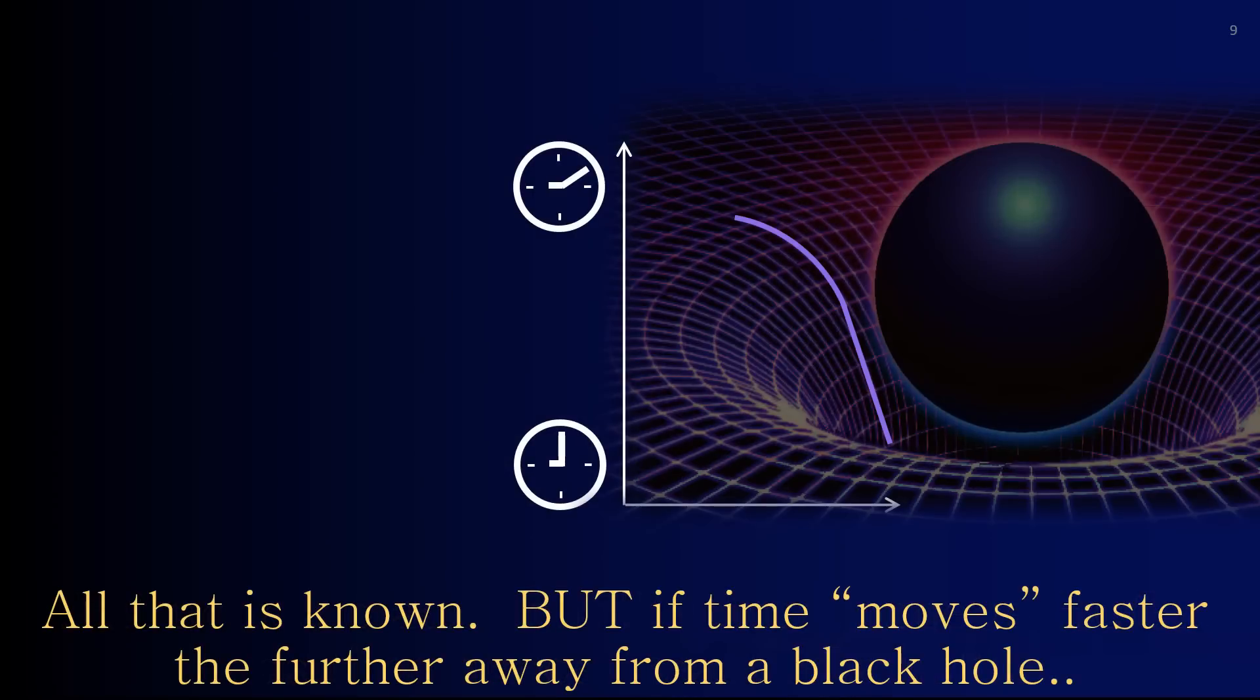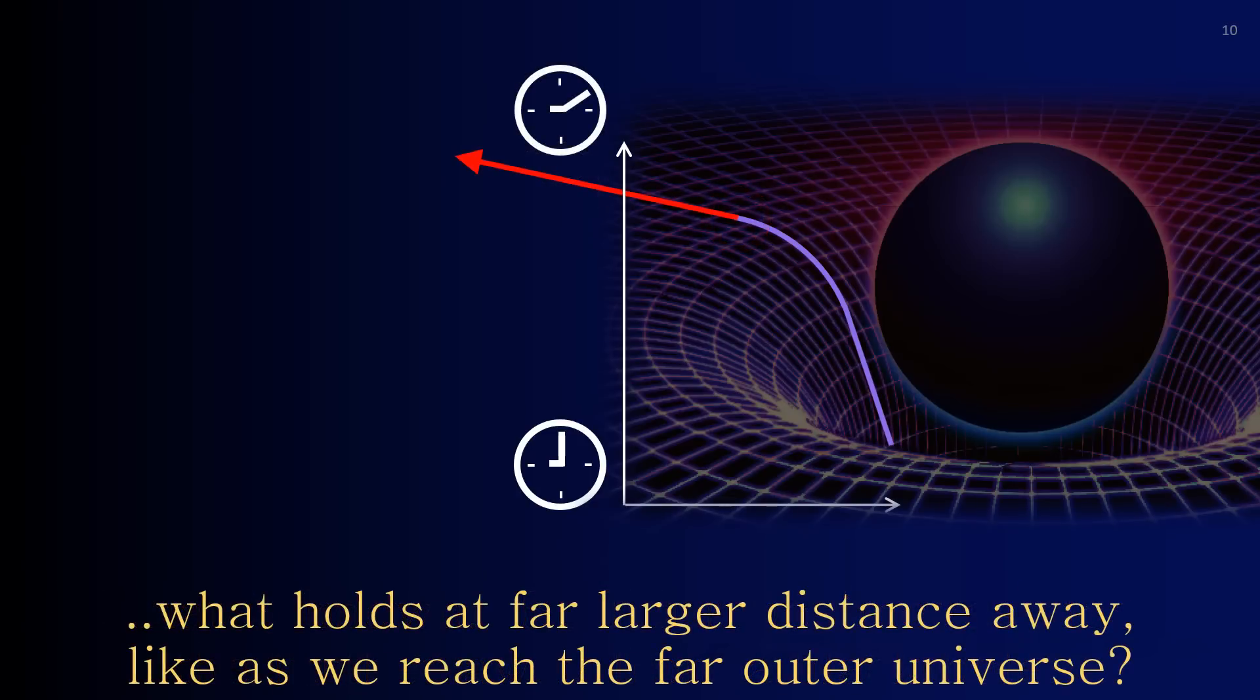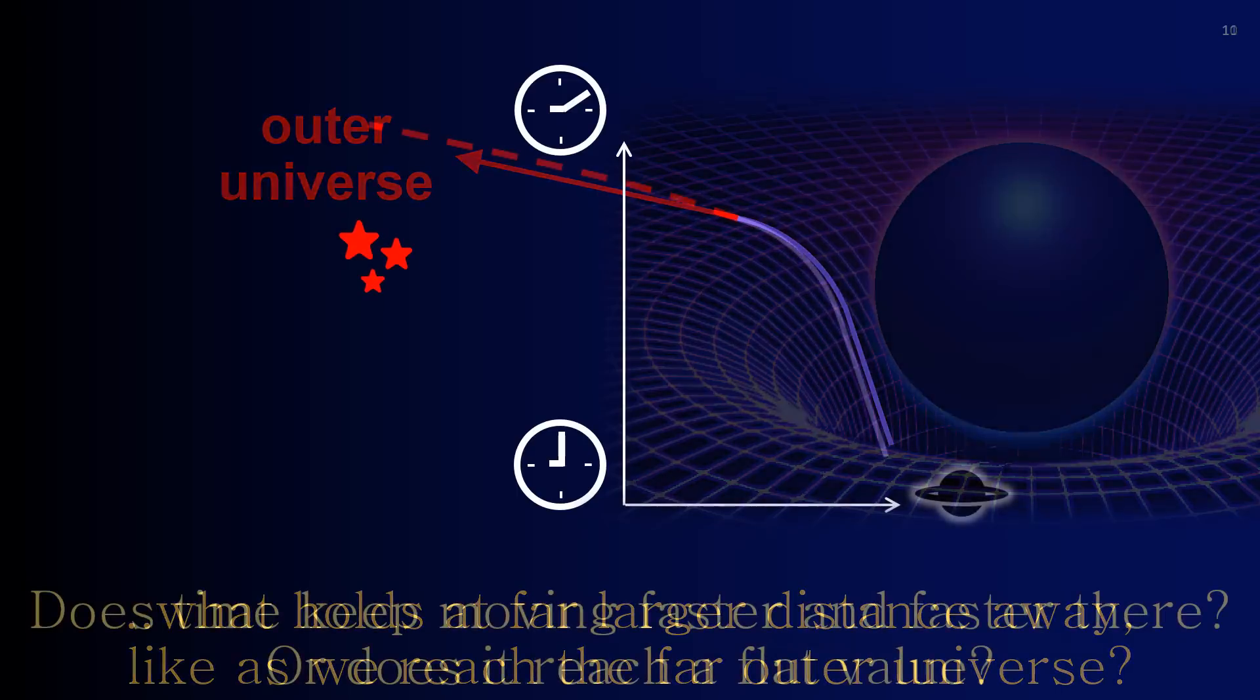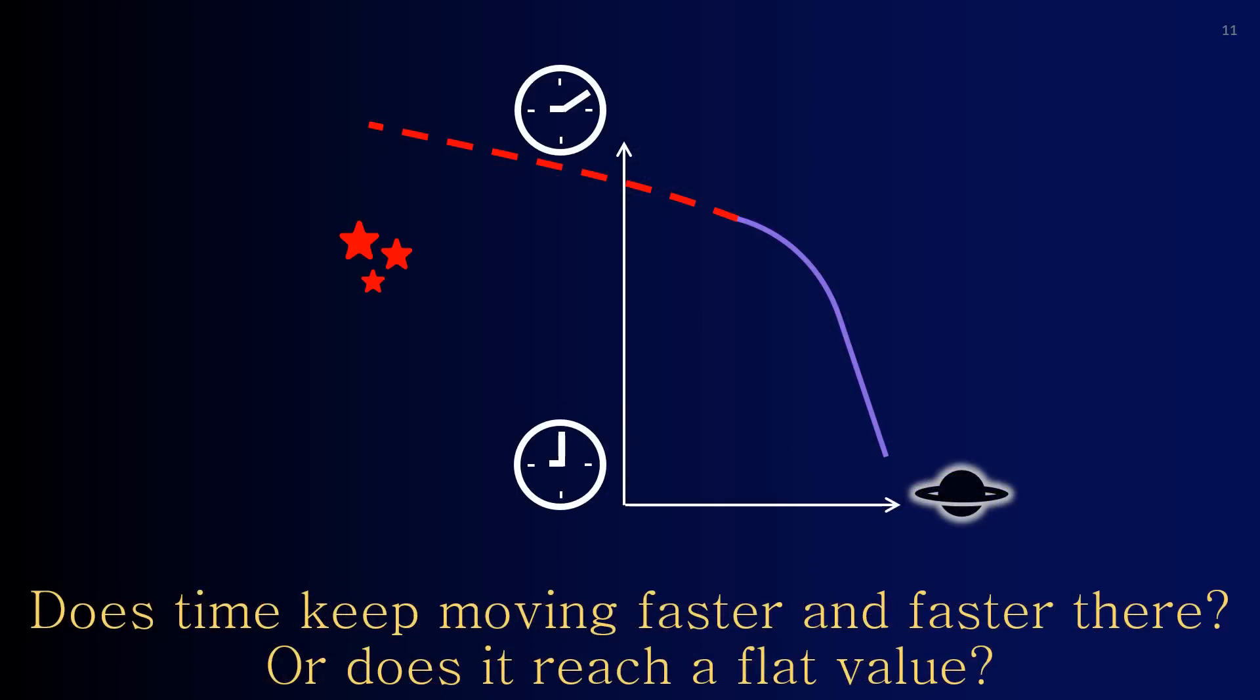All that is known. But if time moves faster the further away from a black hole, what holds at far larger distances away, as we reach the far outer universe? Does time keep moving faster and faster there, or does it reach a flat value?